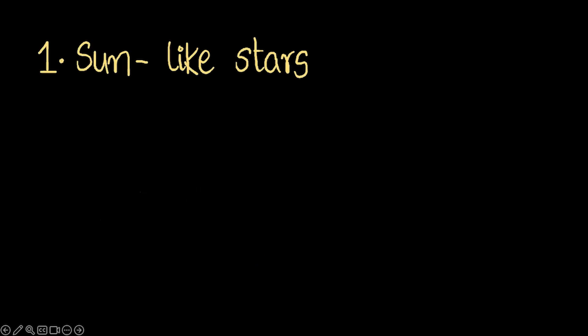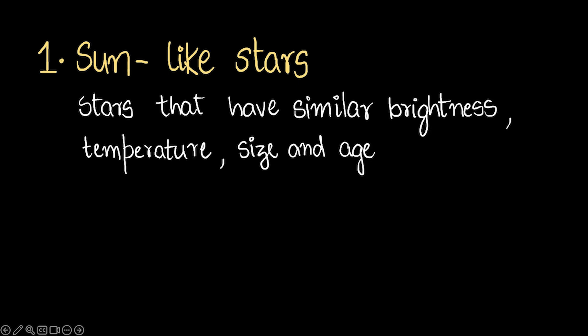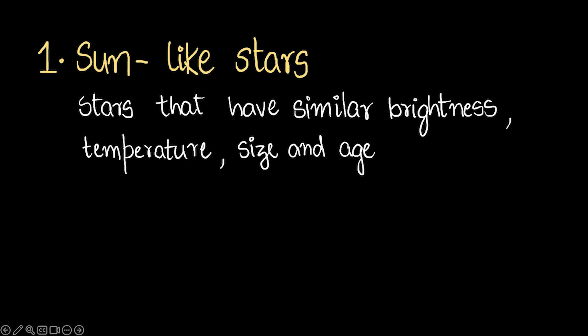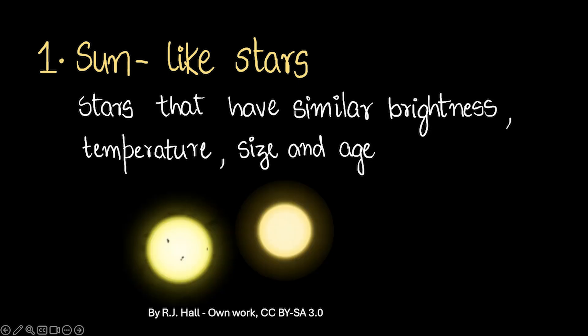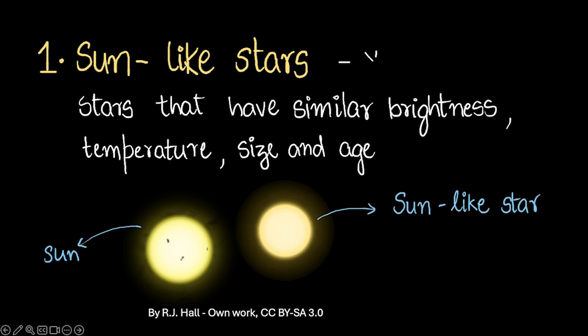Sun-like stars, as the name suggests, are like the Sun — stars that have similar brightness, temperature, and age as the Sun. For example, on the left we have the Sun, and on the right we have a star that looks very similar, with comparable temperature and brightness, placing it in the category of a Sun-like star. This stage is often experienced during the youth of the star.